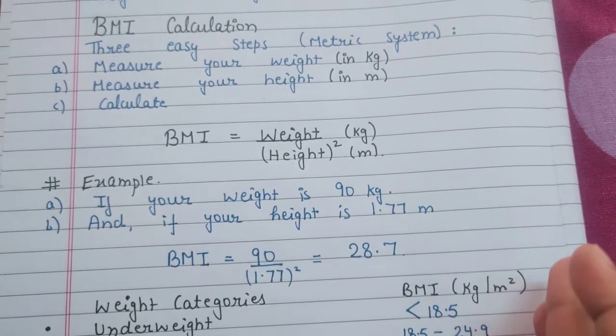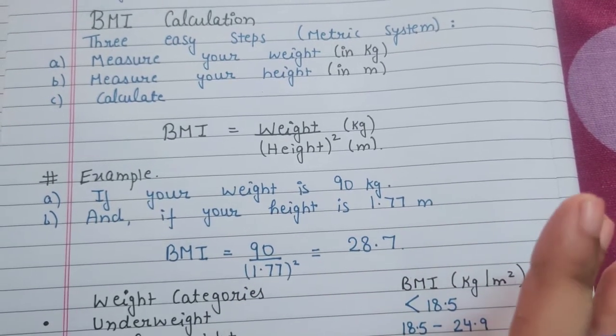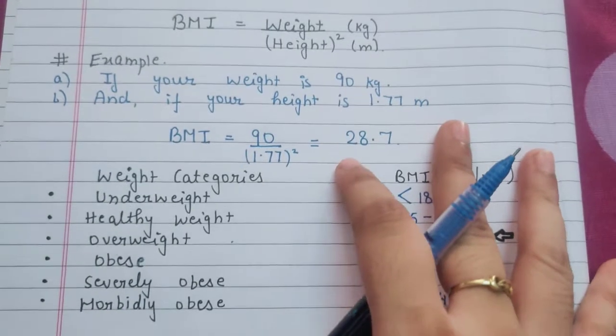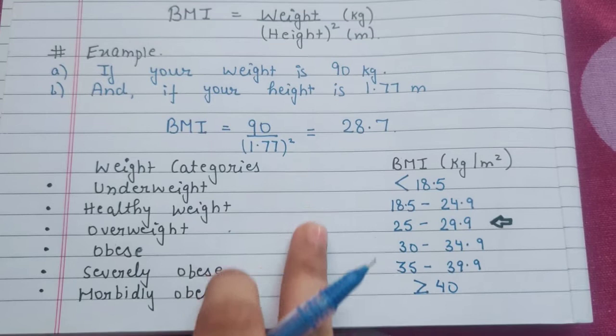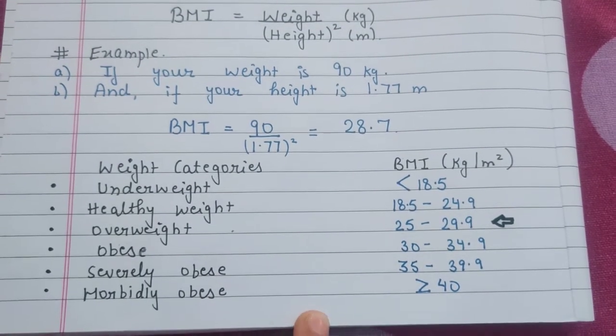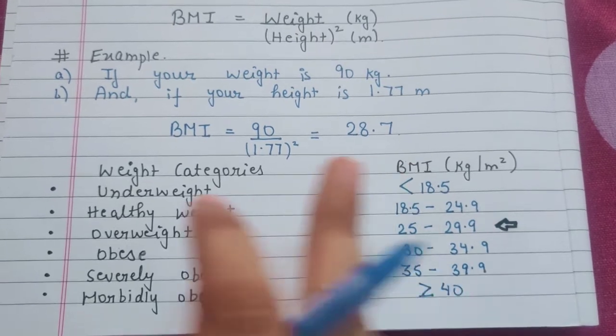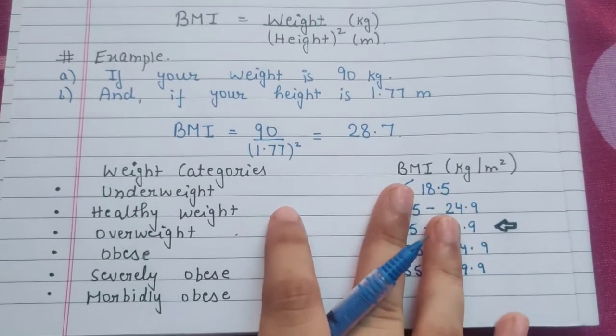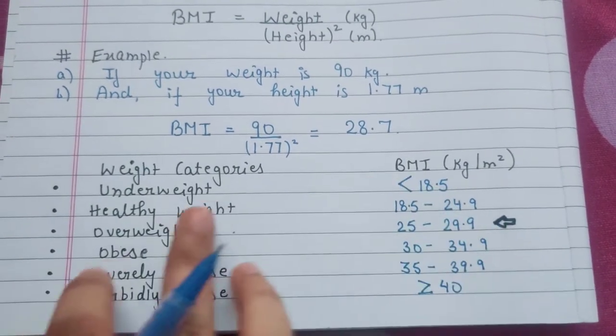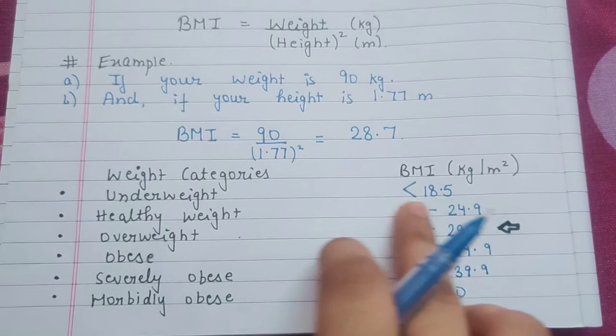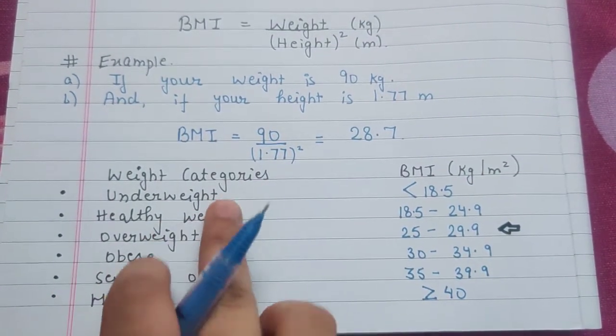This is the table in which weight categories are given and Body Mass Index is given. If your number is 18.5 or below this, then you are underweight.